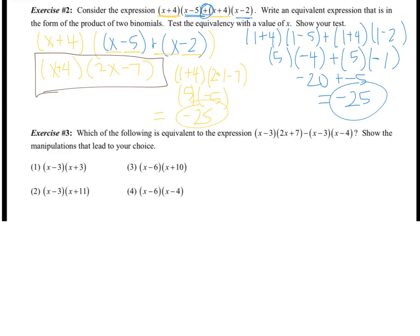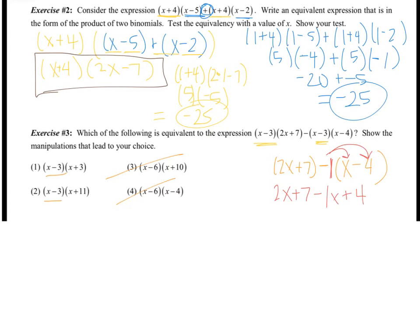Which of the following is equivalent to X minus 3 times 2X plus 7, minus X minus 3 times X minus 4? Look for what is the same in both: X minus 3 is the same in both. So options 1 and 2 have X minus 3, but options 3 and 4 do not. Then for the second binomial: subtracting X minus 4 from 2X plus 7 means distributing a negative 1, giving 2X plus 7 minus X plus 4. Combining like terms: 2X minus X is X, and 7 plus 4 is 11. So X minus 3 times X plus 11 is the equivalent expression — number 2 is correct.